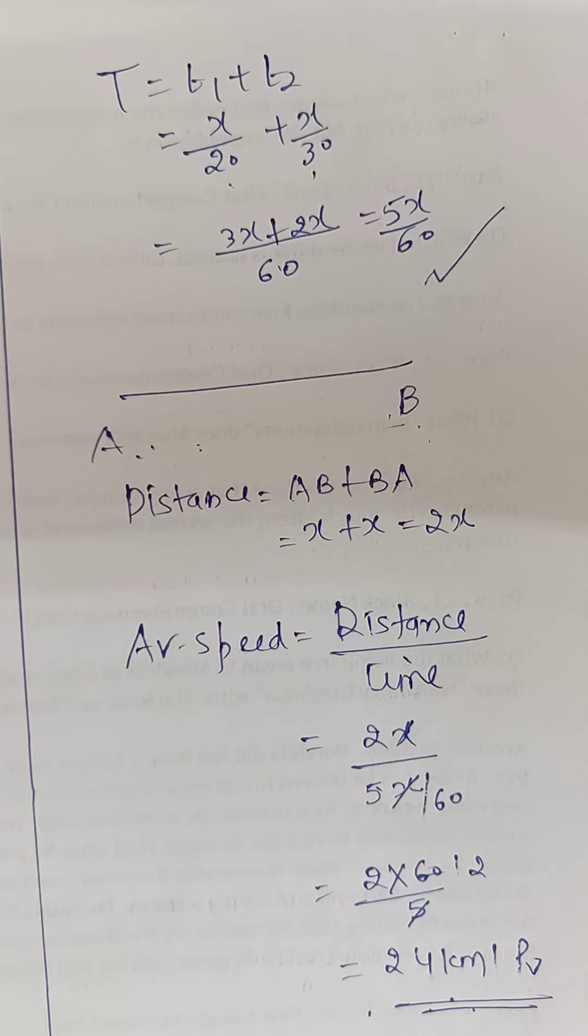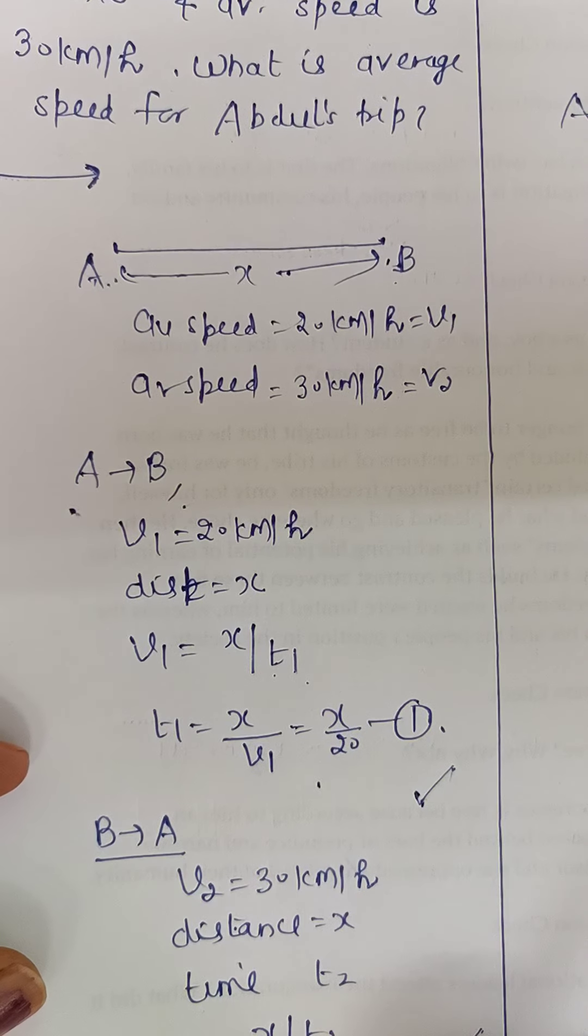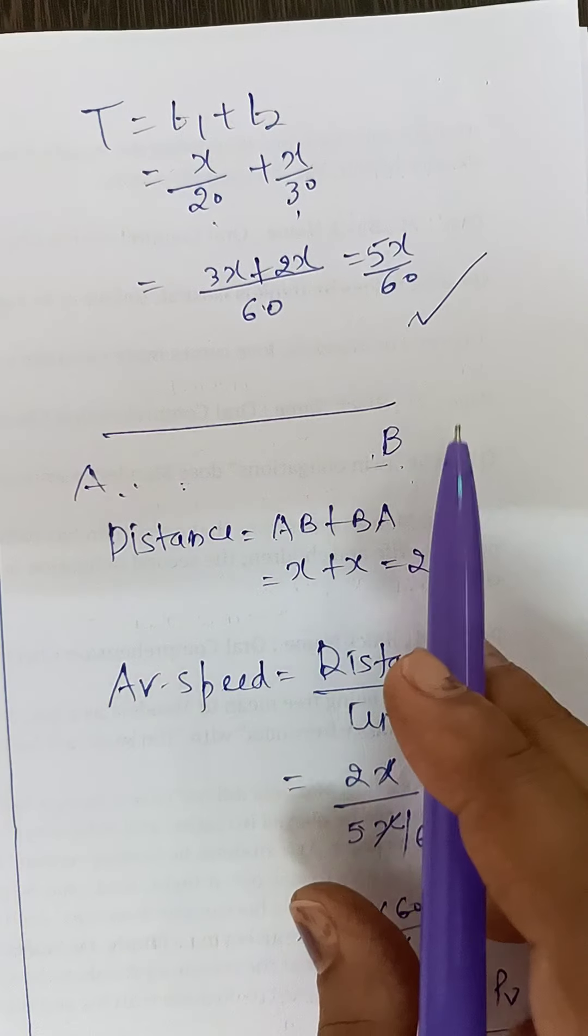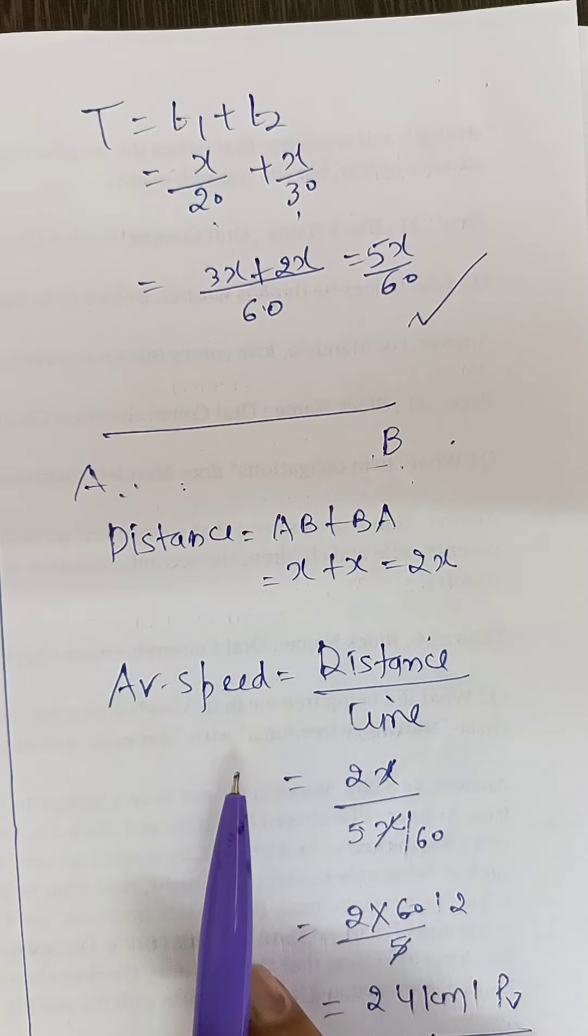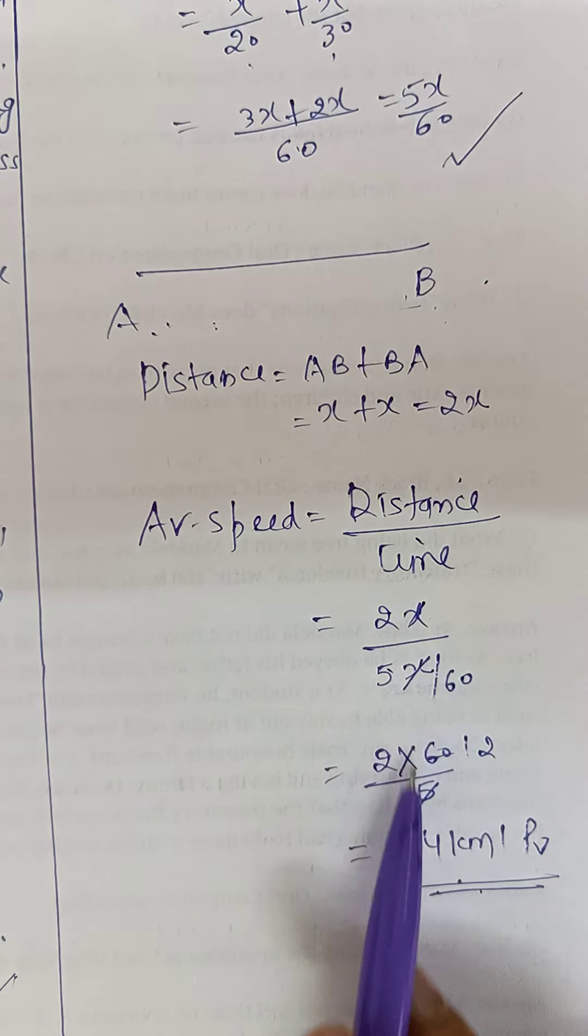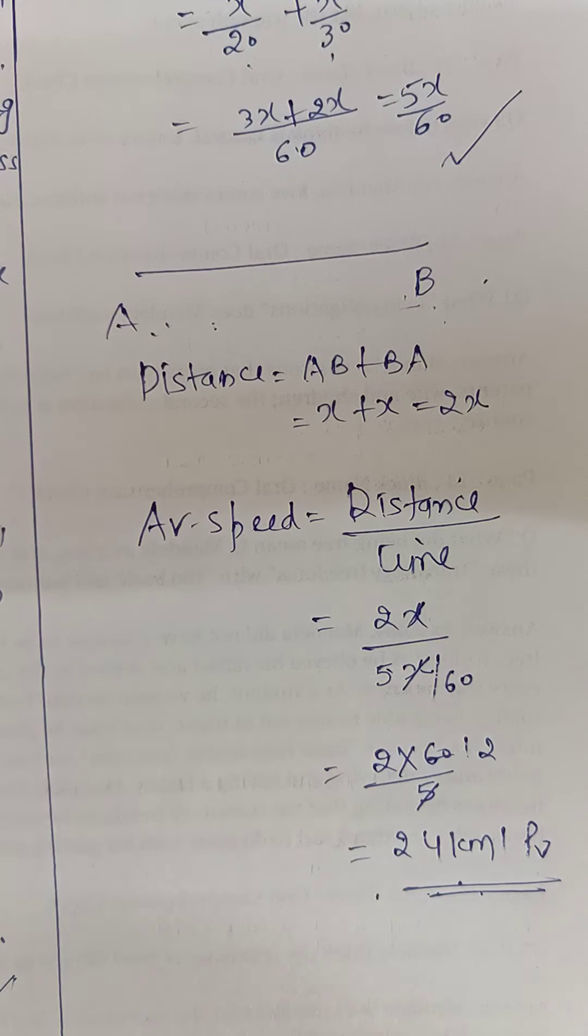Because starting trip average speed, usually students think that if there are two speeds given, so V₁ plus V₂ by 2, that will not give you the answer. In this way, you have to follow this particular method. So first of all, we use the average speed formula using time, then after that we use the total time and total distance. Then we will use the basic formula for average speed, total distance to the total time taken, and hence it will come out to be 24 kilometer per hour.